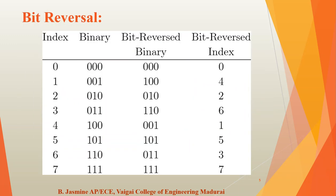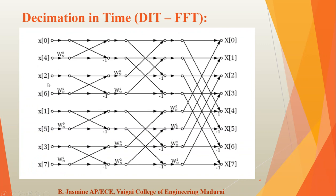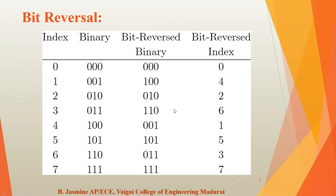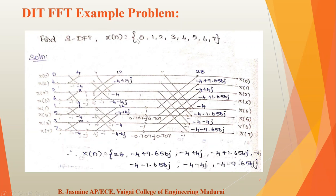Finally, we substitute all values. If the input samples are x(n) = 0, 1, 2, 3, 4, 5, 6, 7, we substitute these sample values into the diagram positions, along with the twiddle factor values. To compute each stage, we multiply the value on the same line, then add the value from the other line. For the example problem, x(n) = {0, 1, 2, 3, 4, 5, 6, 7}. We take the bit reversal order, placing values as x(0)=0, x(4)=4, x(2)=2, x(6)=6, and so on. Then we substitute the twiddle factor values.